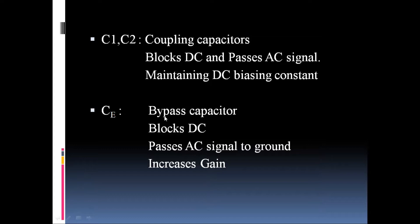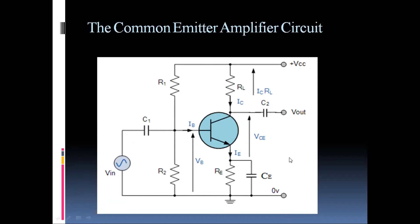The bypass capacitor is connected across the emitter terminal. If we do not use the bypass capacitor, whatever voltage is available across the emitter terminal will provide negative feedback for the transistor, reducing the gain of the common emitter circuit. The bypass capacitor is used to bypass the AC signal available across the emitter terminal, which increases the gain of the circuit.